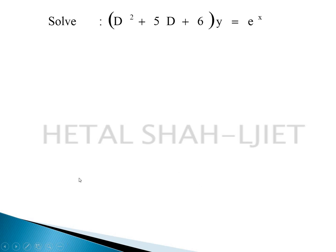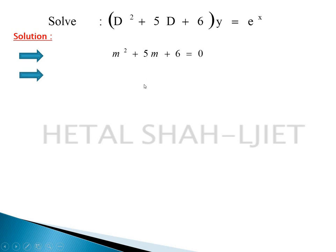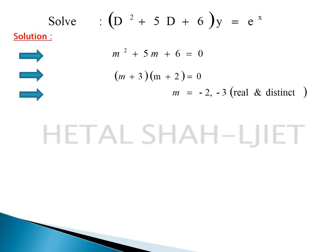Example: (D² + 5D + 6)y = e^x. The right hand side is non-zero — it is the exponential term e^x. The auxiliary equation is m² + 5m + 6 = 0. The factors are (m+3)(m+2) = 0, so roots are m = -2, -3, which are real and distinct. The complementary function is CF = c1·e^(-2x) + c2·e^(-3x).